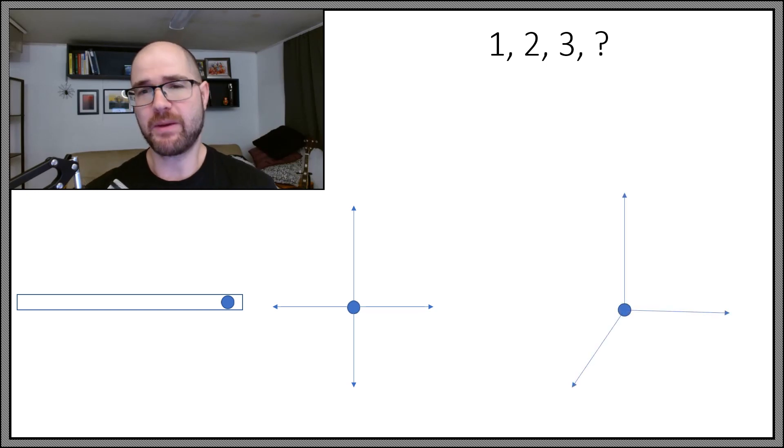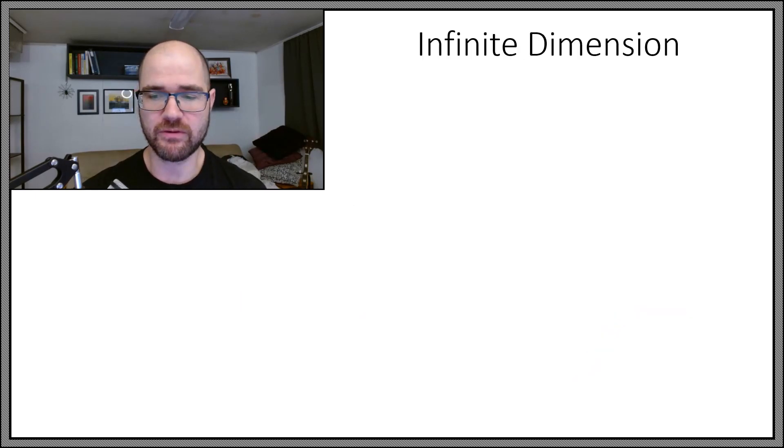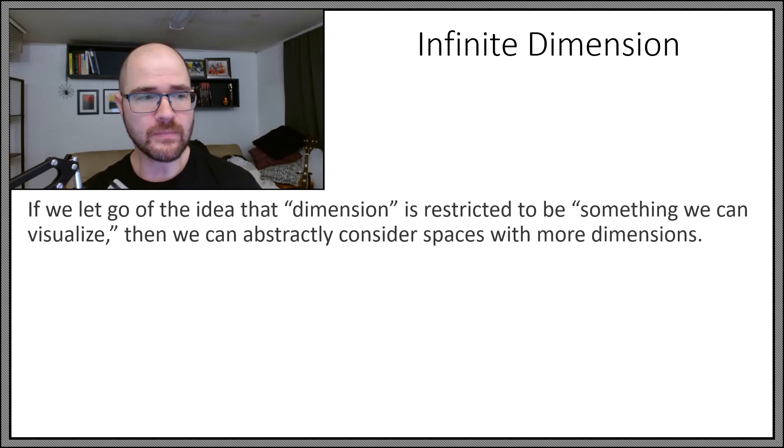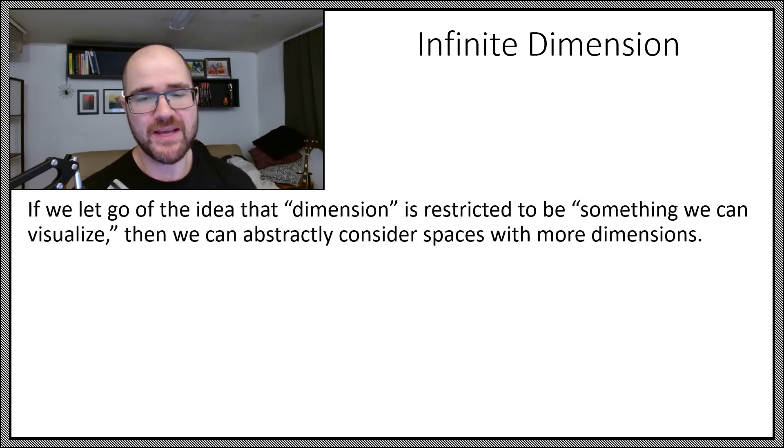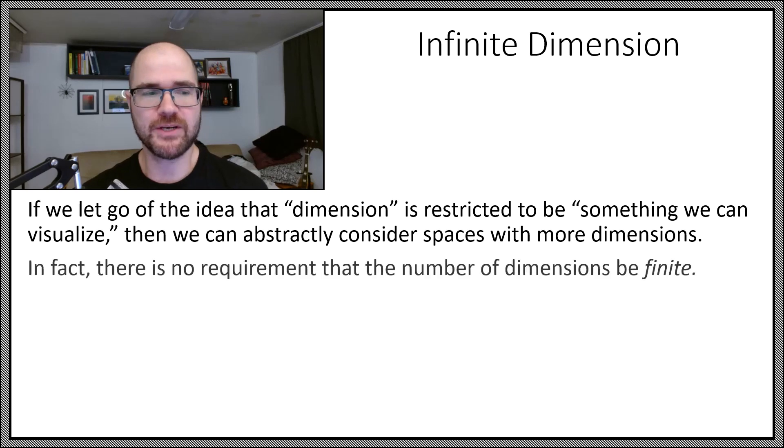So here is my best attempt at drawing a three-dimensional representation. We can move along this direction, right-left. We can move along this direction up-down, but now there's this direction that we imagine coming out of the screen towards you. It can move along that too, and just as in the planar example, you can do a sort of combination of all of them. But if we let go of the idea that dimension has to mean something we can visualize with our brains, then we can totally consider spaces that have more than three dimensions.